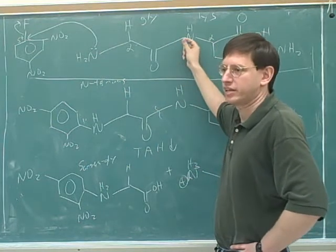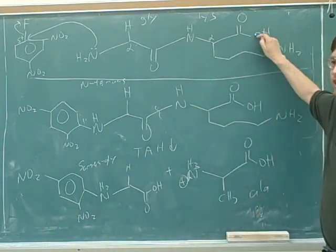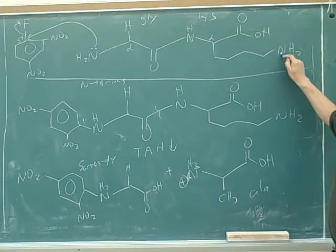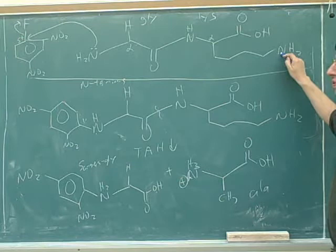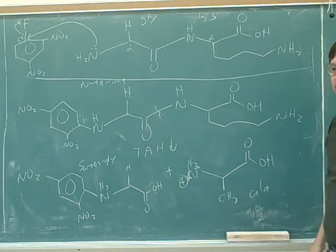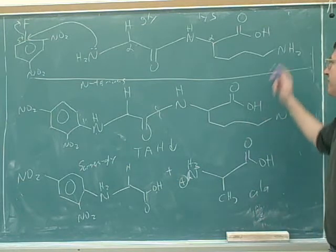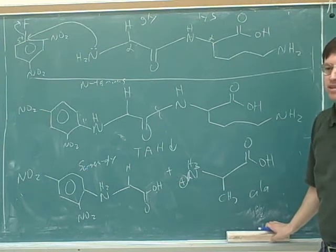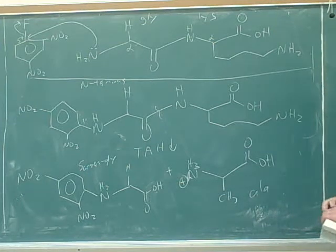Will this nitrogen attack? No, because it's an amide. Will this carboxyl group attack? No. Will this attack? Yes, because it's an amine. So, this kind of complicates things because now the Sanger's reagent is not only on the N-terminus. It can also be on this side chain. Now, actually, this is not a very serious complication. This is not going to give us any trouble as long as we know about it.